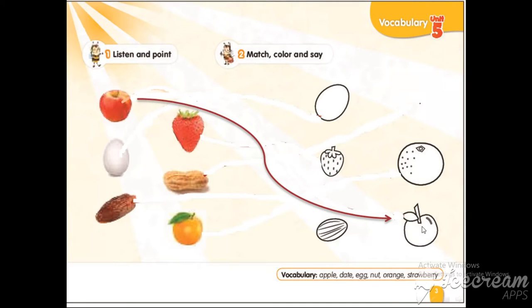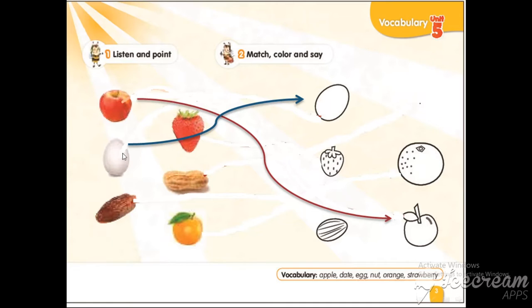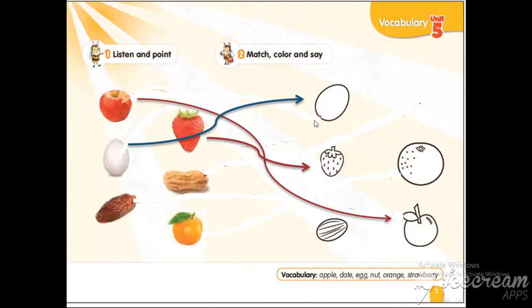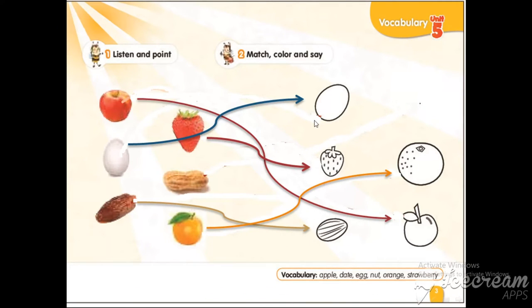Egg. Draw the line from this egg to this egg. Strawberry. Date. Orange. Very good. Color it.